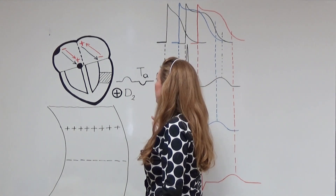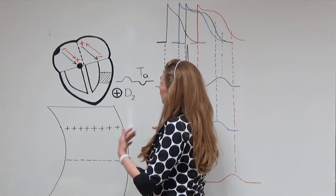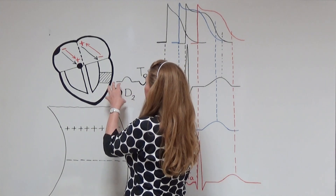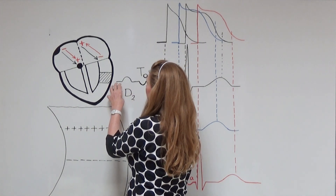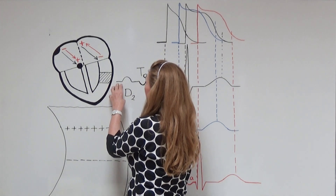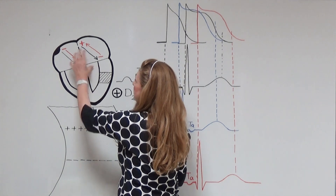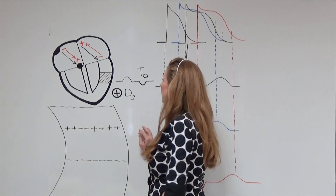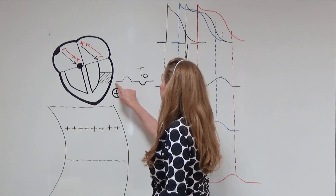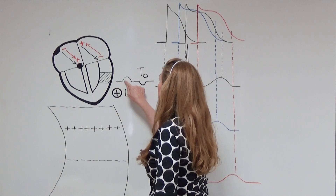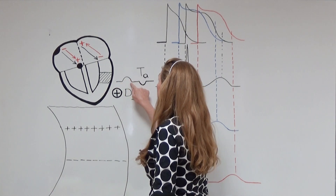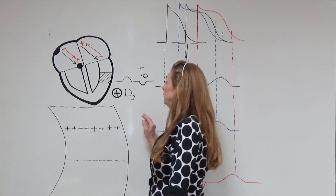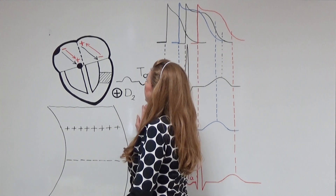How will this dipole be reflected on the electrocardiography? According to the ECG rule, if you have a positive electrode facing the positive side of a dipole, you are going to obtain a positive recording. And here we have our positive P wave in the D2 recording.